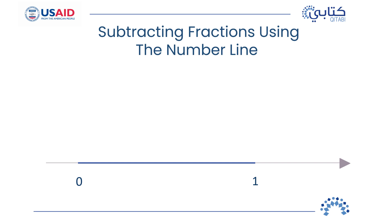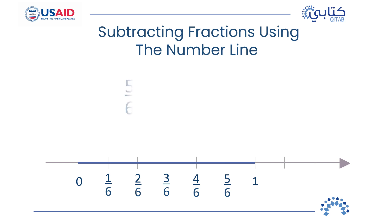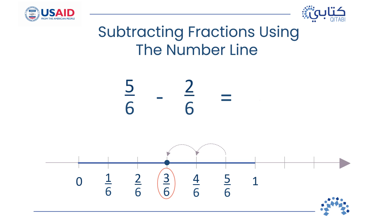Let's do another example using a number line. The one whole is divided into six equal parts, so each part is one-sixth. Now it is your turn: use the number line to subtract five-sixths minus two-sixths. First go to five-sixths, then jump two jumps backwards. Where did you land? At three-sixths! Five-sixths minus two-sixths equals three-sixths.